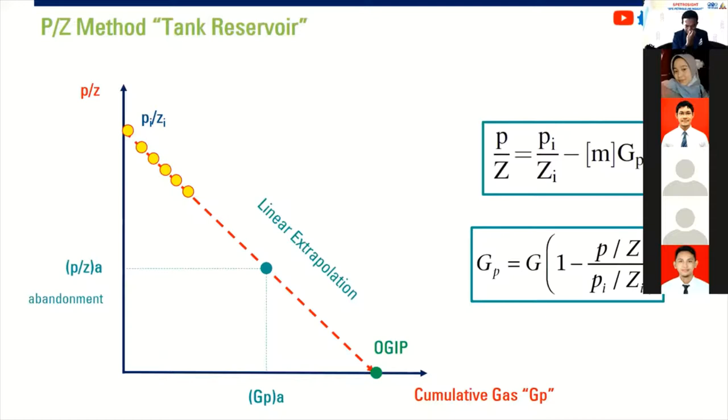So if you plot the P over Z result, you can obtain the P data from static bottom hole pressure data. If you have that, you can collect it monthly or bi-monthly or yearly. You can obtain that and then you can calculate your Z factor and then you plot it like this one. Let's say we have six data in the early time of our production. We achieve like this one linear relationship.